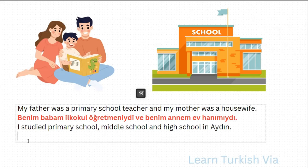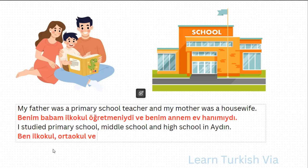In the next sentence, it says: I studied primary school, middle school, and high school in Aydın. So, I — ben. Primary school — ilk okul, comma — virgül. Middle school: middle is orta in Turkish — ortaokul. And — ve. High school — lise. And all these schools are particular schools for me, so I need the accusative suffix with the buffer letter — liseyi.